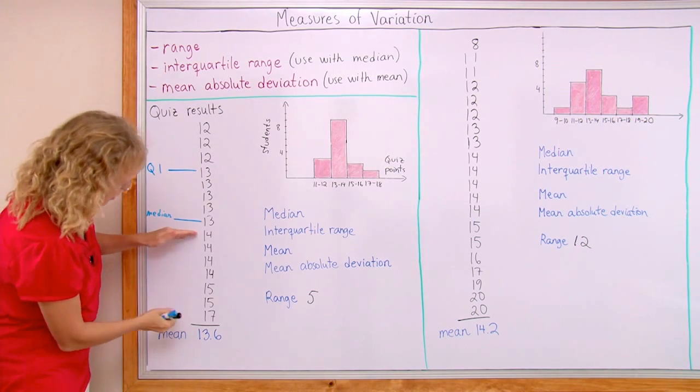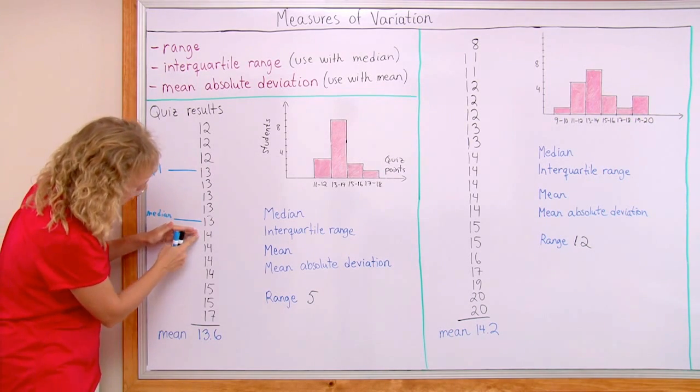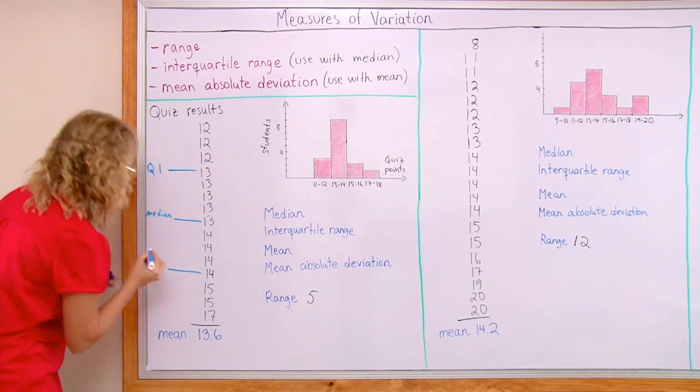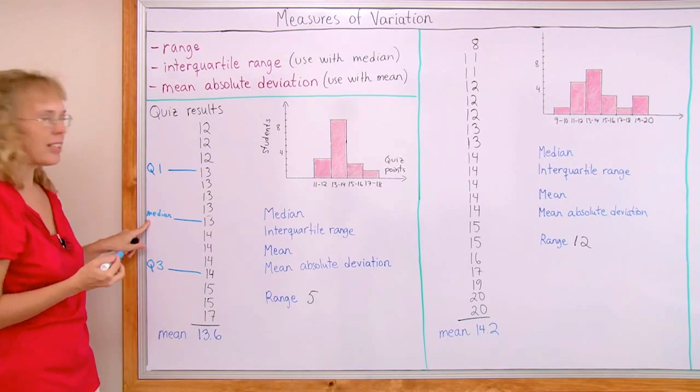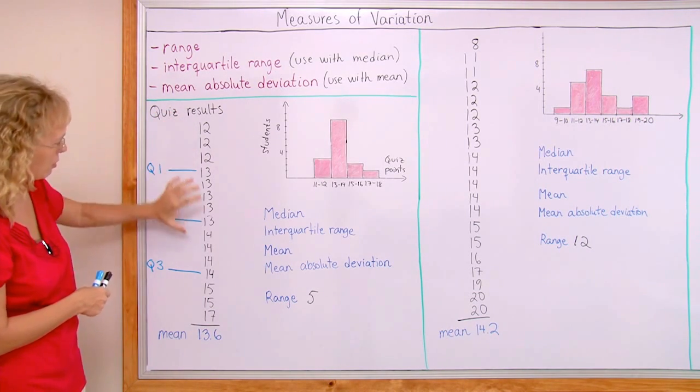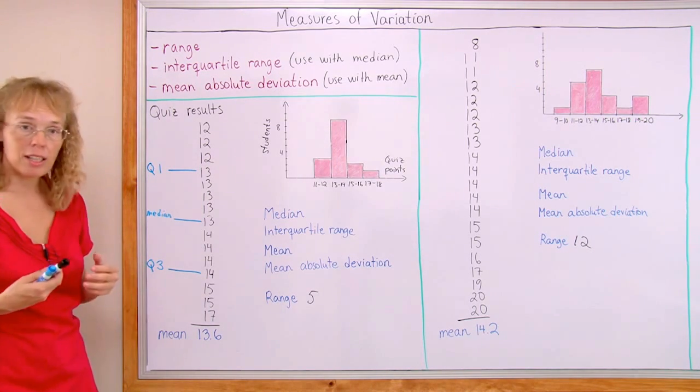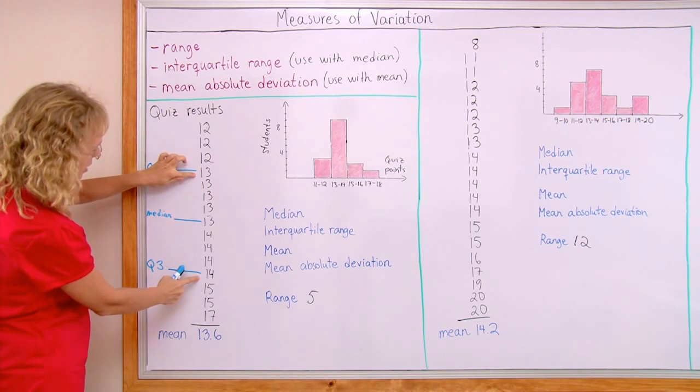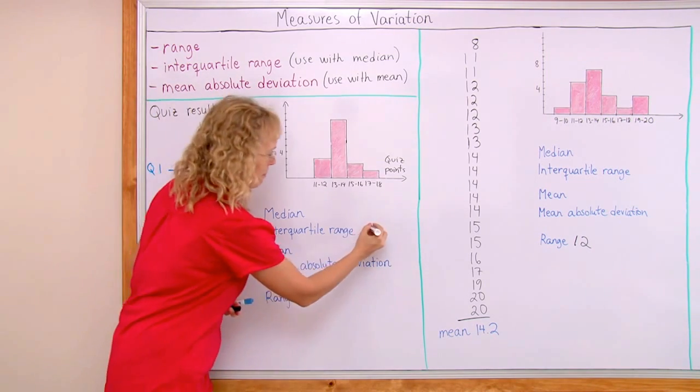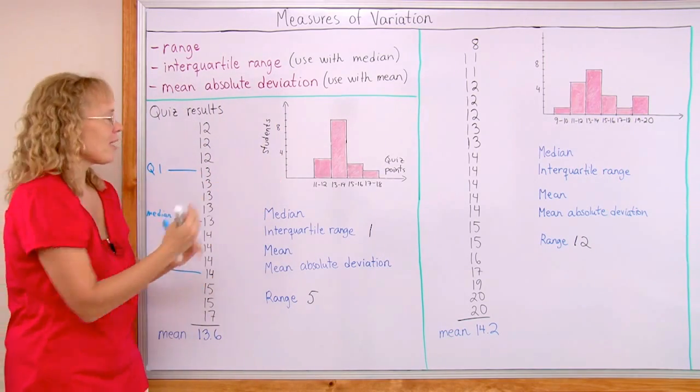And then over here, again, I have seven items here. And I take the median of those seven, which would be the fourth item, which is this one here. It's called the third quartile. Median is the second quartile. So now the data is divided into four parts. And the interquartile range is when I subtract this and this. 13 and 14. It is only one. And of course, that is indicating how close together the data items are.